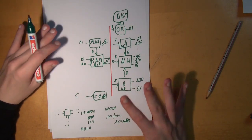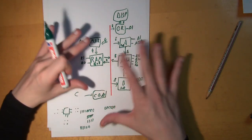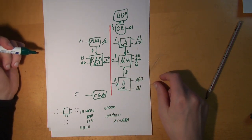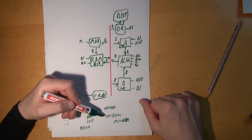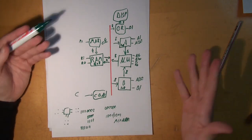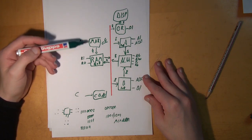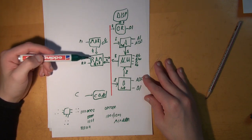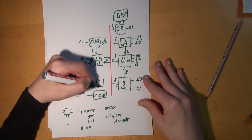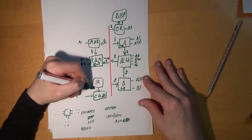To make this work, the control matrix needs the opcode at all times. Just like we have a memory address register that gives the memory address to the RAM at all times, we have an instruction register that gives the opcode to the control matrix at all times.